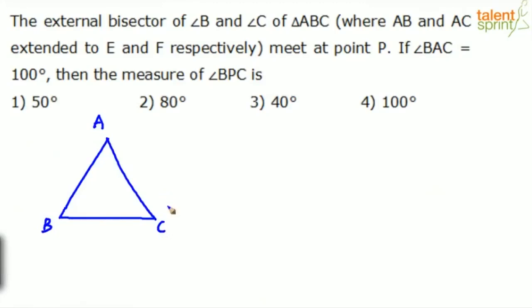Now the external bisector of angle B and angle C of the triangle ABC where AB and AC are extended. So AB is extended. Let's extend AB and AC is also extended. So let us extend AC.